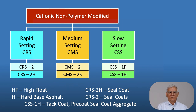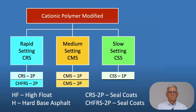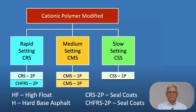CRS2Hs are used in seal coats, and CRS2 are also used in seal coat applications, where CSS-1H is quite common for pre-coating materials and for tack coat applications. The polymer-modified cationic emulsions include CHFRS2P — cationic high-float rapid setting with polymer, grade 2 — used for seal coats quite often. CRS2Ps are also common for seal coat applications. Note that we're using rapid setting emulsions for seal coats, not medium setting or slow setting materials.